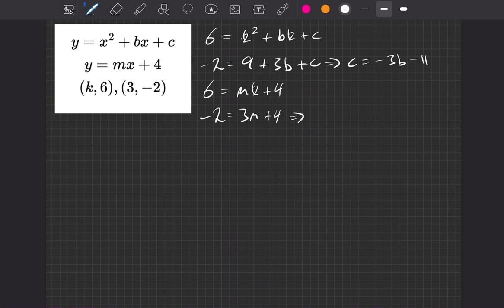So if we rearrange that, what do we get? Well, 3m is equal to minus 6 by taking away the 4 from both sides. Now if we divide by 3, we get m is equal to minus 2.